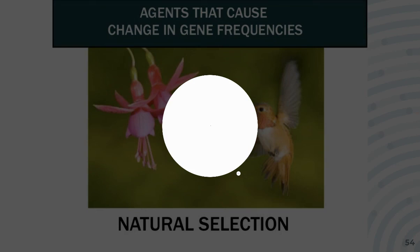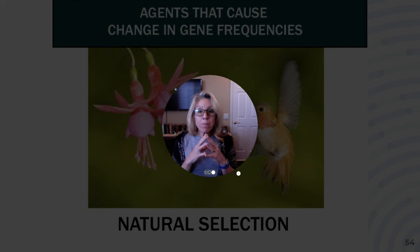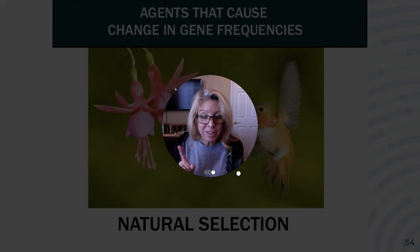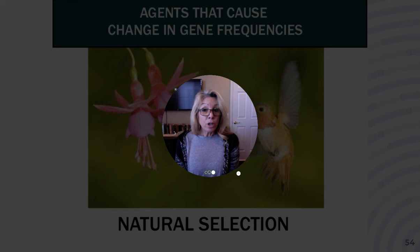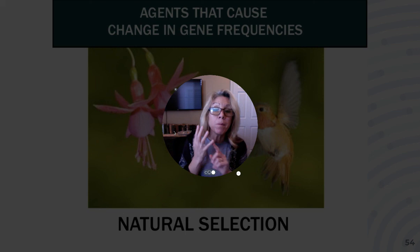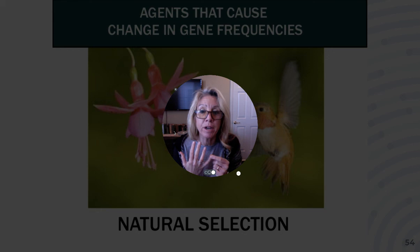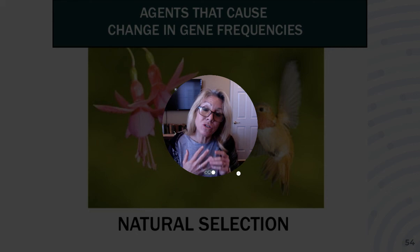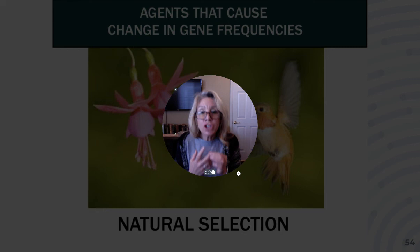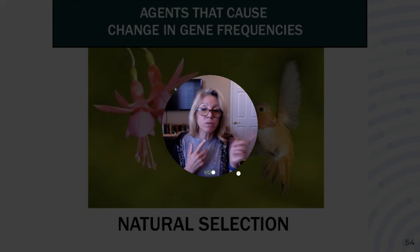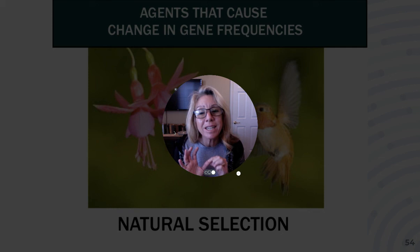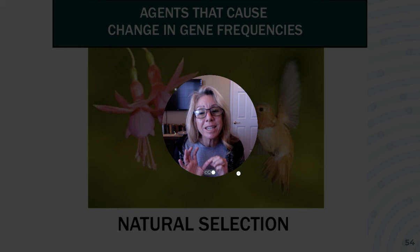To recap: evolution is a change in allele frequencies. The Hardy-Weinberg principle says that to prevent evolution, you must meet five conditions: populations must always be large (small ones are susceptible to genetic drift); mating must always be random (non-random mating leads to selection); mutations must be prevented (they change allele frequencies); gene flow between populations must be prevented; and there cannot be any selection. Since it's difficult to meet those five conditions, you cannot maintain Hardy-Weinberg equilibrium and therefore evolution is occurring. If you're one of my students, I'll see you in class.